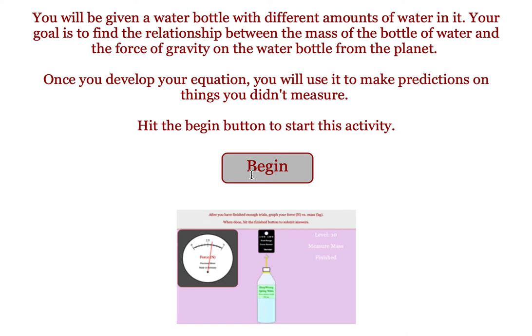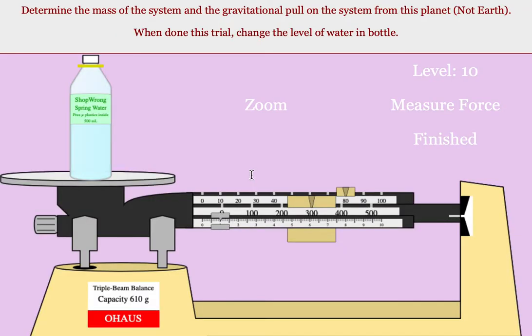In this activity you'll be given a water bottle and you'll be changing the amount of water in the bottle. You'll be looking at the connection between the mass of the bottle and the gravitational pull on the bottle. When you do the virtual version you will not be on Earth. You will get the same relationship you would have on Earth but you'll get a different graph constant.